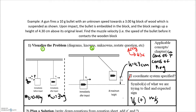An important point: we need to identify what kind of collision we have — elastic, inelastic, or perfectly inelastic. Since the bullet embeds itself in the block, we have a perfectly inelastic collision. That's really important because it dictates how we treat the momentum equation. Think of two cars running into each other and sticking together — same sort of thing applies here where the bullet sticks to the block.